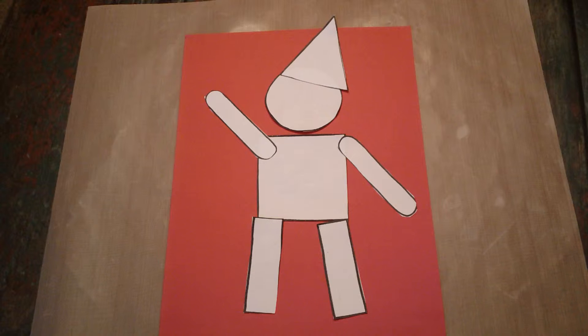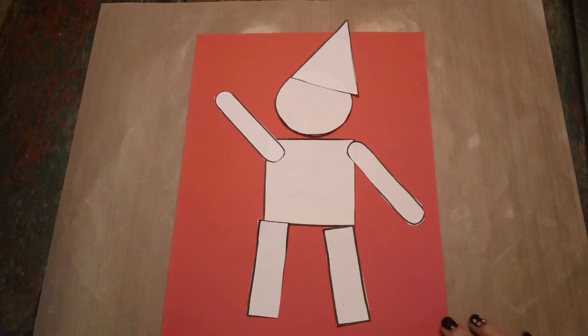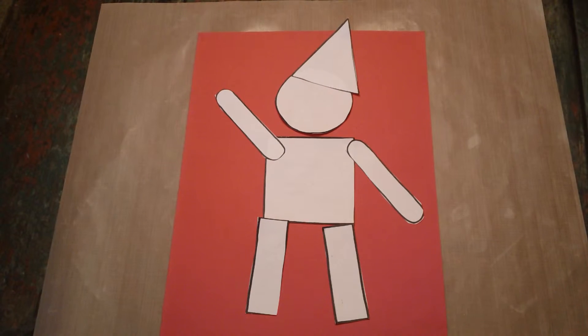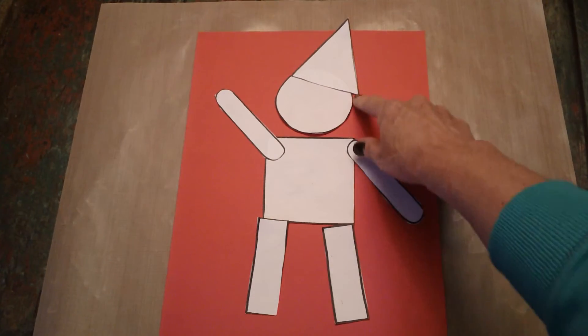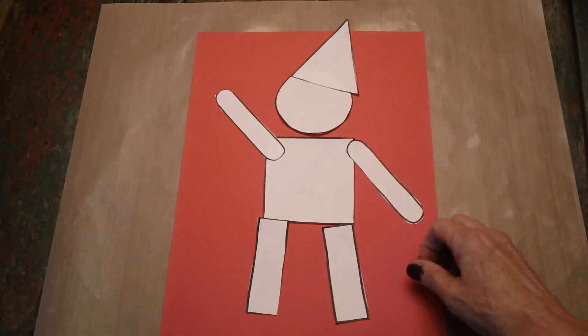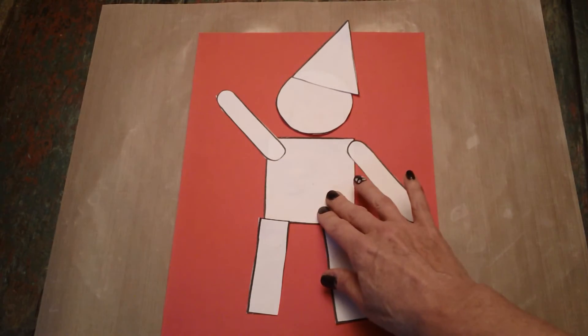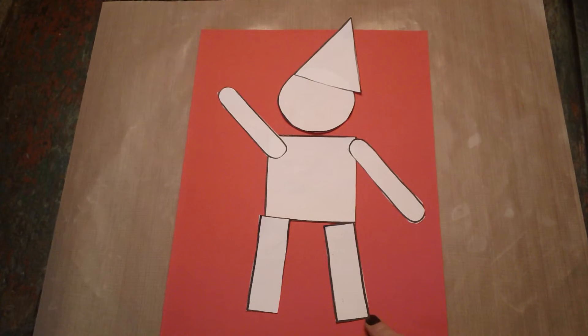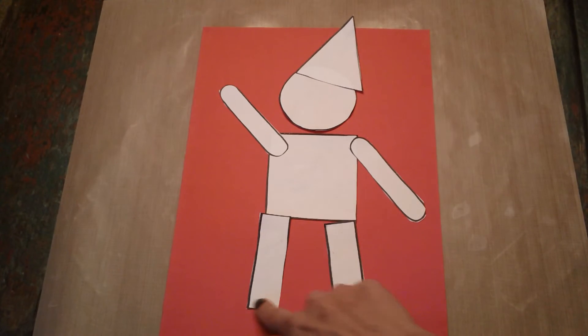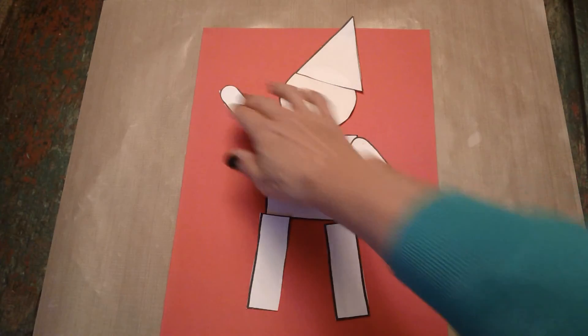Once you get to this part, we're going to put out a box of crayons. And I want you to decorate your shape person. Give your shape person a face, some hair. You can decorate your shape person's clothes and his hat of course. And maybe give your shape person some shoes or feet and hands.